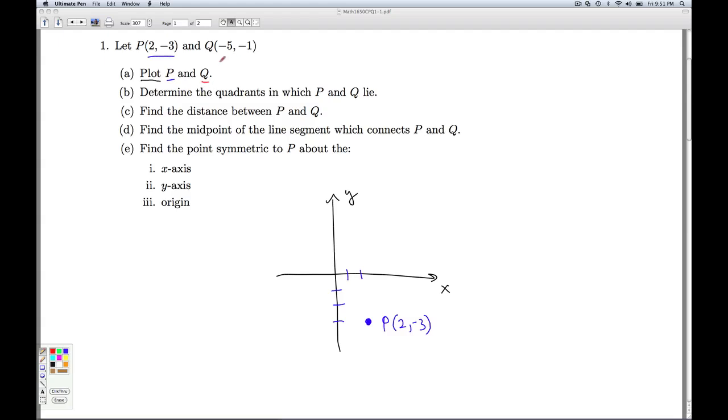The point Q has coordinates (-5, -1). So we start at the origin, move to the left five units, and then move down one unit. And there's the point Q. So that's it for part A.